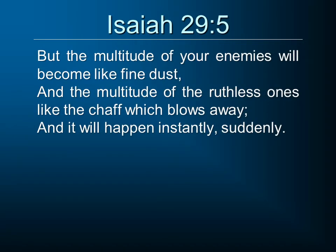Verse 5: 'But the multitude of your enemies will become like fine dust.' You'd expect to read that Jerusalem becomes like fine dust — that Jerusalem is destroyed — but instead, it's the enemies of Jerusalem who become like fine dust. 'And the multitude of the ruthless ones like the chaff which blows away. And it will happen instantly, suddenly.' Spoiler alert: we get to Isaiah chapter 37, and the angel of the Lord comes and the city is delivered as the angel of the Lord goes against the Assyrian army.